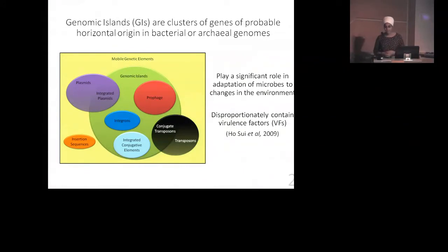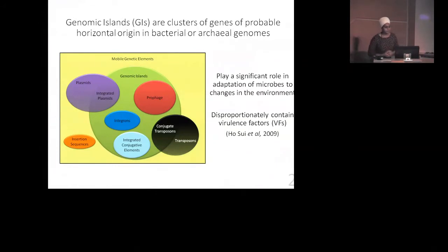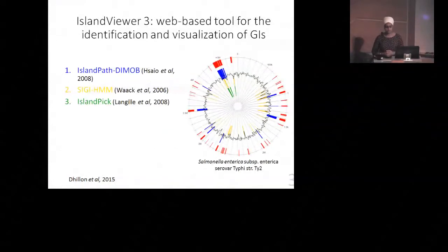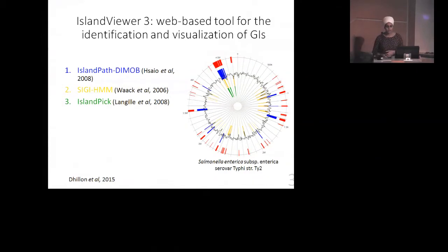We've shown in a previous study that genomic islands also disproportionately contain virulence factors. So there's a lot of interest to try to identify genomic islands, especially when you're looking at pathogen genomes. We've developed a tool called Island Viewer, which is a web-based tool for the identification and visualization of genomic islands, and it integrates three of the most accurate genomic island prediction methods.